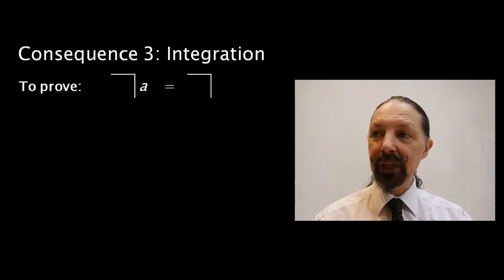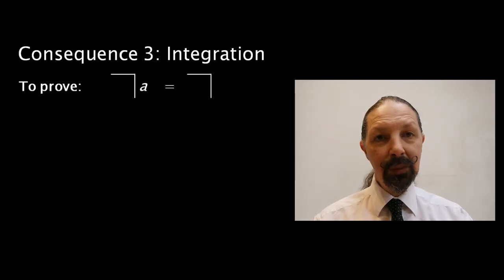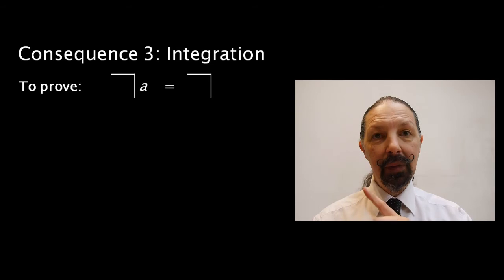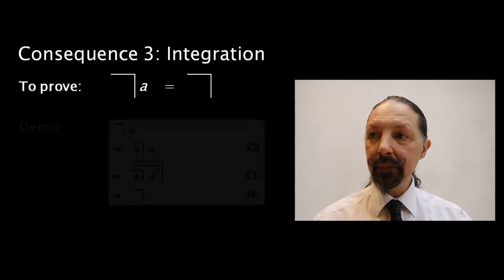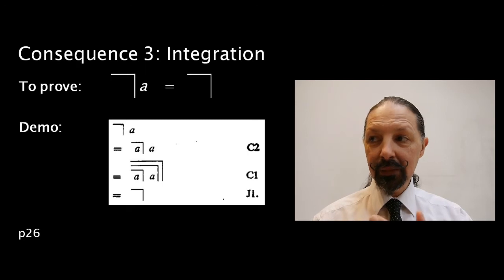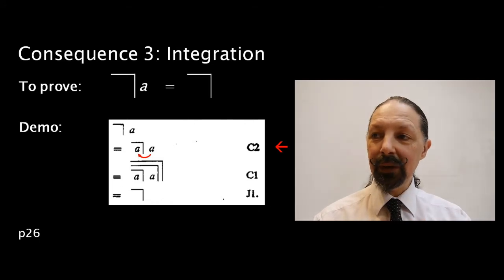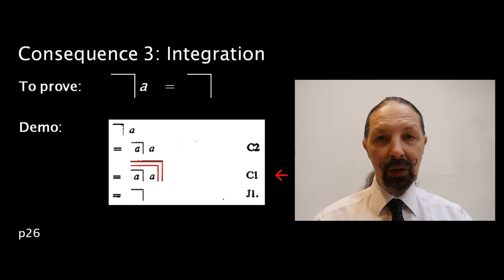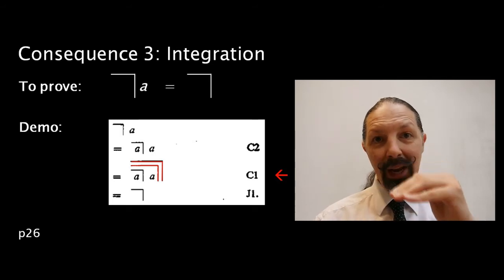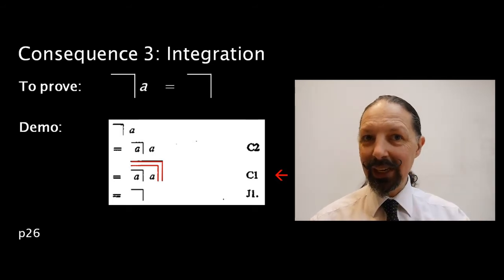Our job is to prove that mark A is equivalent to mark. Here's the demonstration. I told you we were going to use C2. We're going to copy the A that's outside the mark into the mark. Then we're going to use C1 on top of it. That produces, very sneakily, a J1 expression, which can be removed.